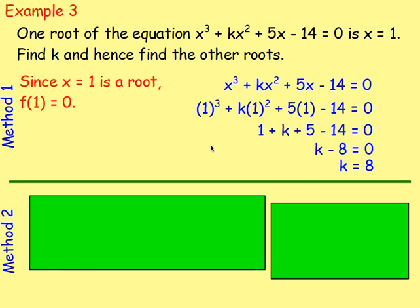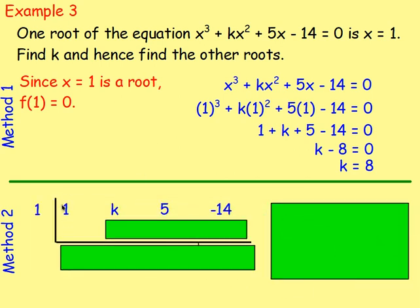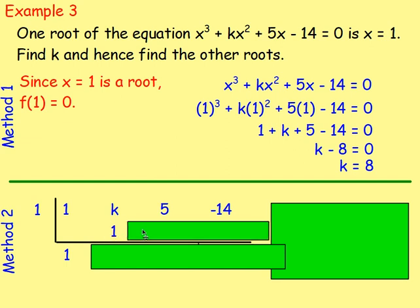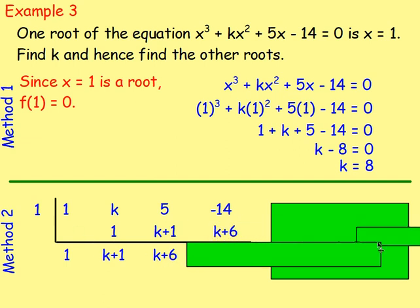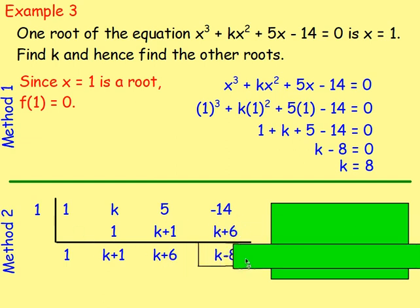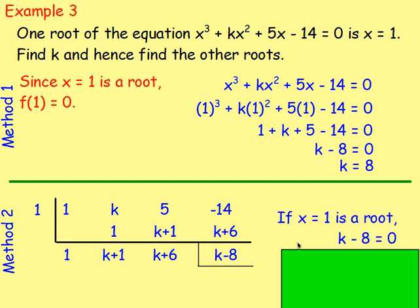So replace x with 1 and you would end up with 1 cubed plus k times 1 squared plus 5 times 1 take away 14. Simplify that: 1 add k add 5 take 14 equals 0. Simplify it: k take away 8 is 0, so k equals 8. That is one way to do it and that is absolutely fine. Alternatively, you can set out your L-shape, write down the coefficients, and work your way along from left to right. We know one of the roots is x equals 1. Add the columns: 1. Multiply by 1: 1. Add: k add 1. Multiply: k add 1. Add: k add 6. Multiply by 1: k add 6. Add the columns: k minus 8. Since x equals 1 is a root, k minus 8 must equal 0, so k equals 8.